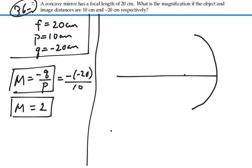So let's put our focal point in there and our object distance is 10 centimeters. So our object is located inside the focal point, halfway between the focal point and the vertex.